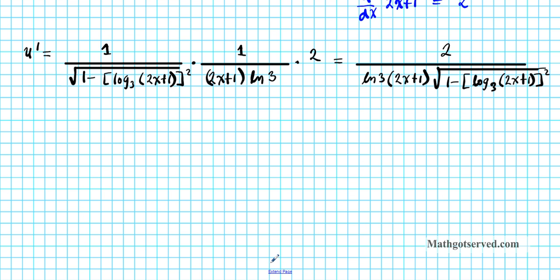Now let's find v'. v is the denominator function. From the original problem, v is cosecant of 2 raised to the x squared power. This is a composition of three functions: the outermost is cosecant, then the exponential function 2 raised to the x squared, and the innermost is the quadratic or power function x squared.